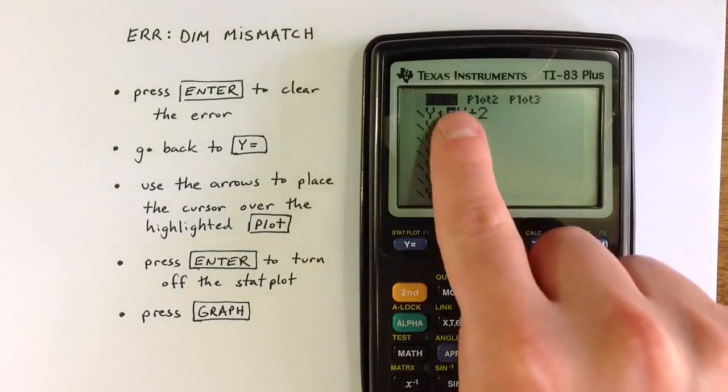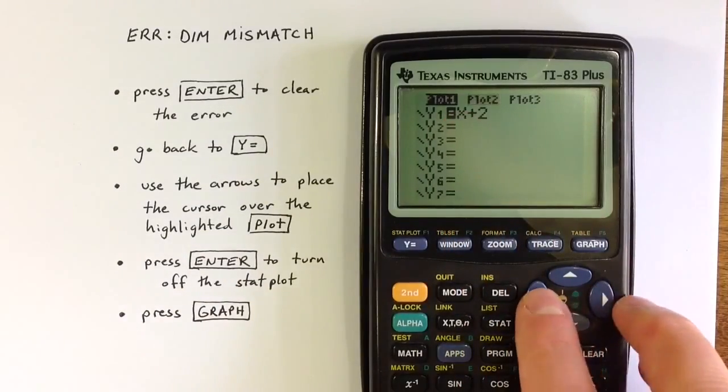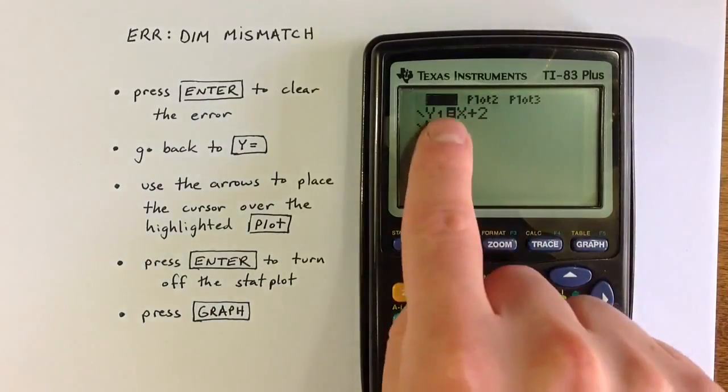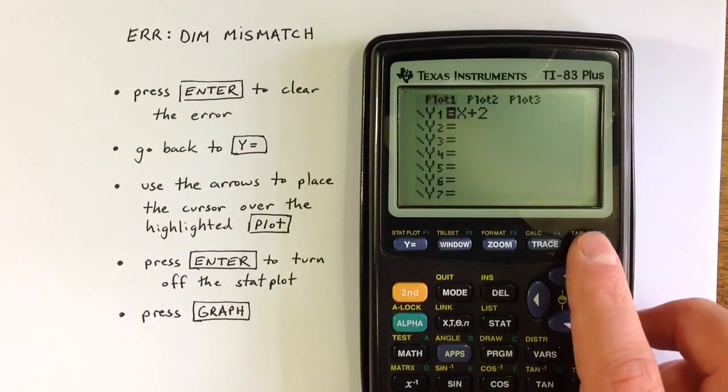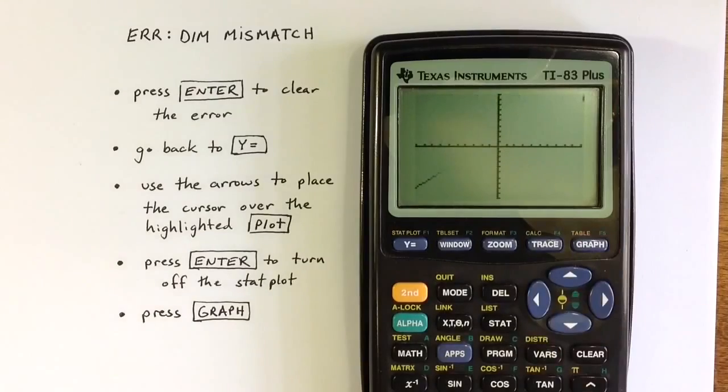and then use the arrow keys to go over the highlighted plot. Plot 1 is highlighted, so now if I hit enter it will turn off plot 1 and pressing graph a second time will create